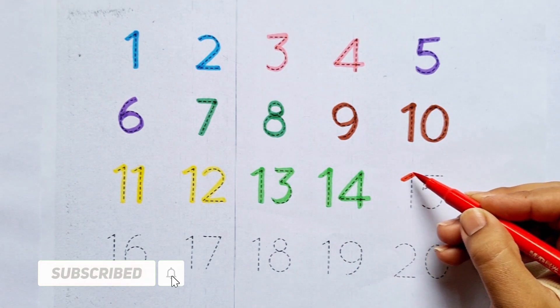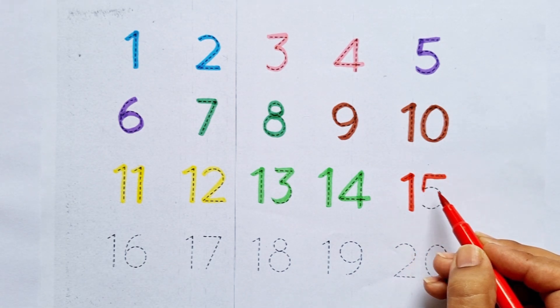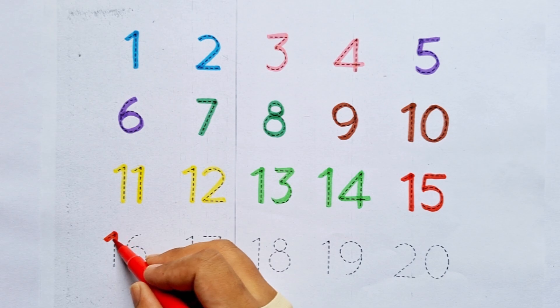Fifteen: one, five. Fifteen. After fourteen comes fifteen. Sixteen: one, six. Sixteen. After